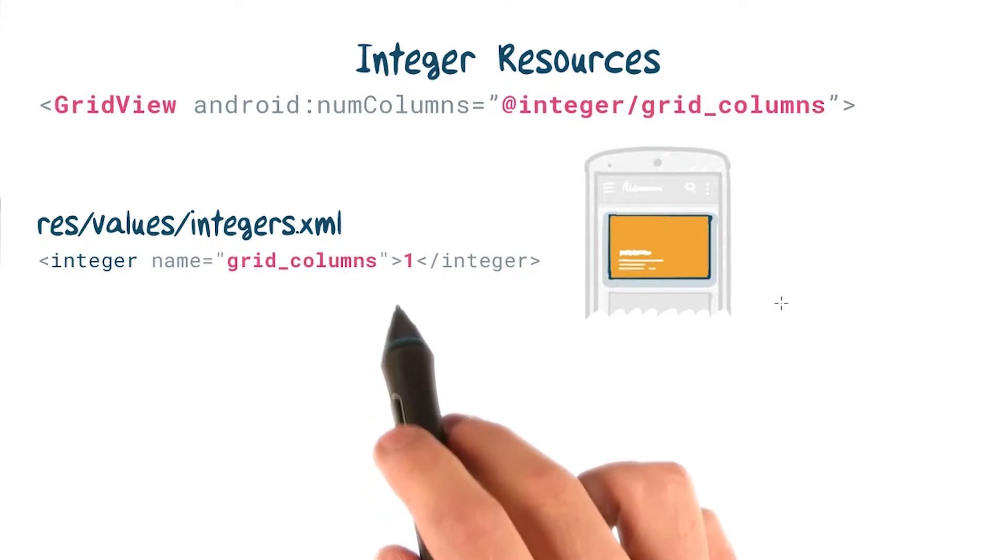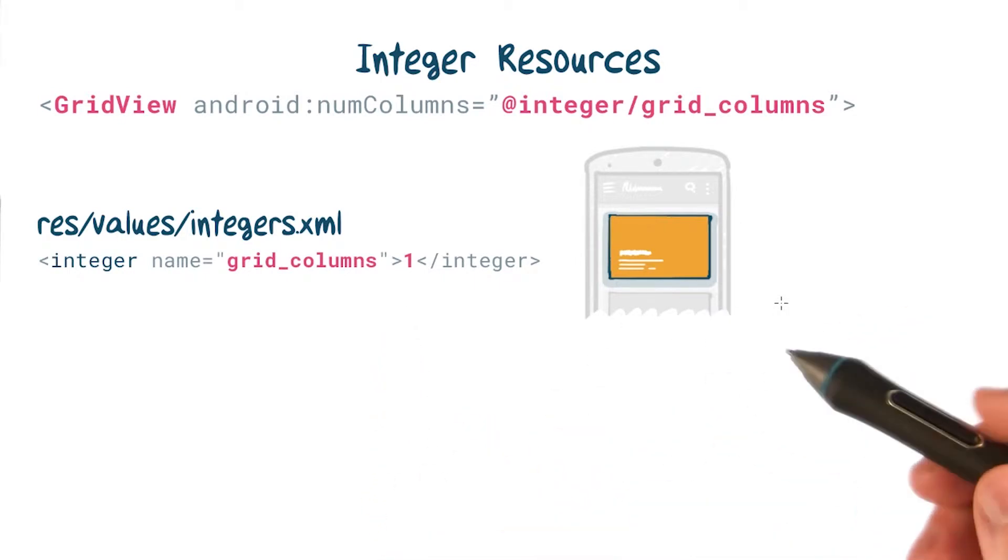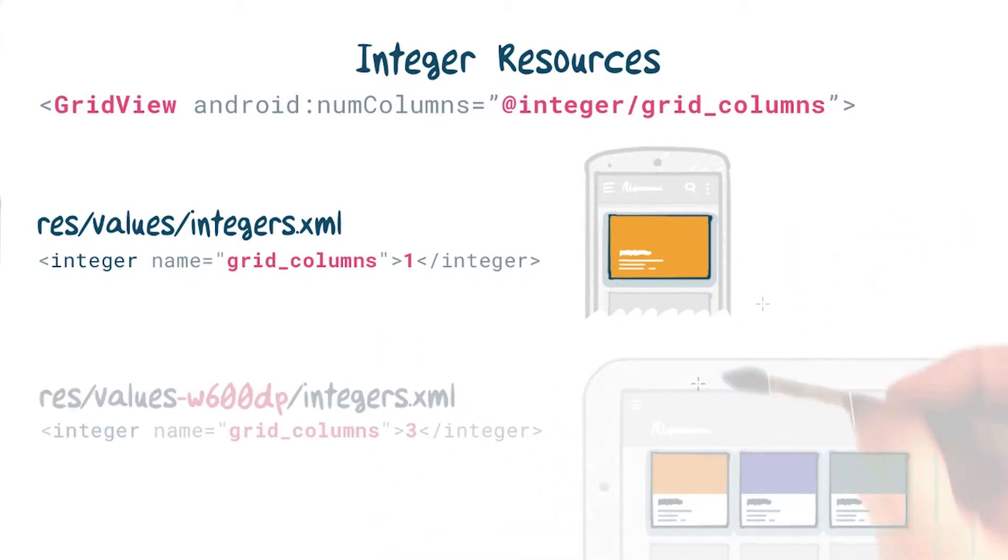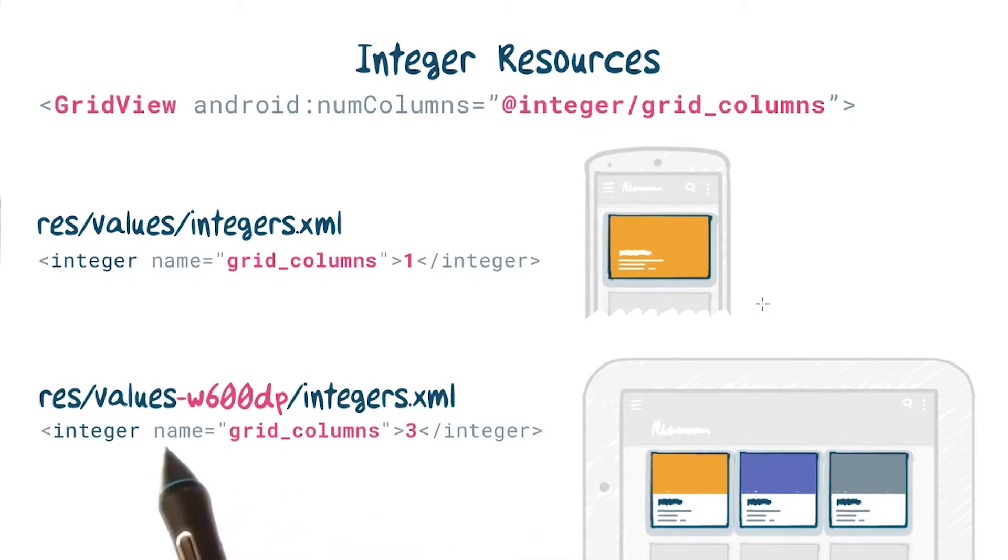On a phone, you could have one column, which is basically the same as a vertical list. And on a tablet, or with the W600DP qualifier, we could bump it up to three columns. This approach works for both GridView and the grid-based layout managers bundled with RecyclerView.